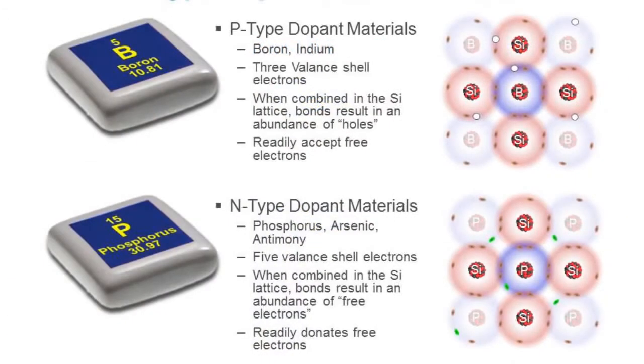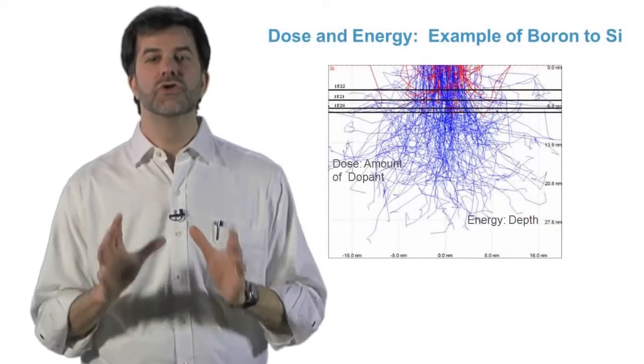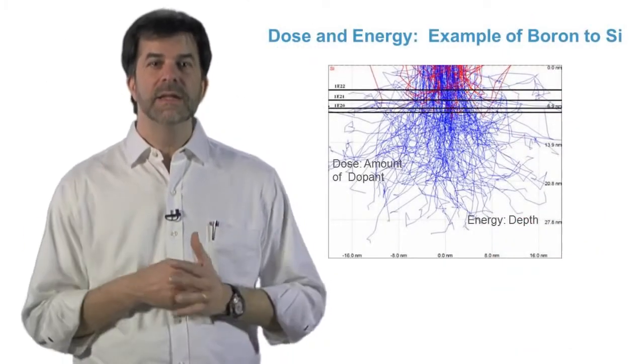P-type dopants add positive charge carriers known as holes and n-type dopants add negatively charged electrons as the charge carrier. Now, we can talk about how to introduce these dopant atoms into the silicon crystal.